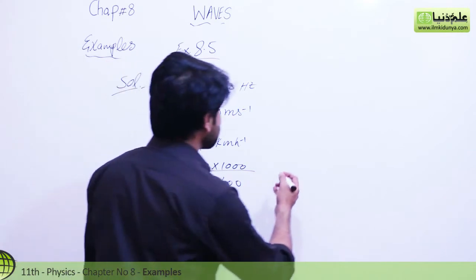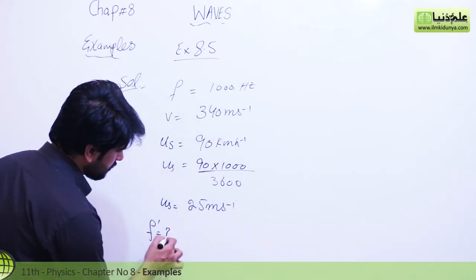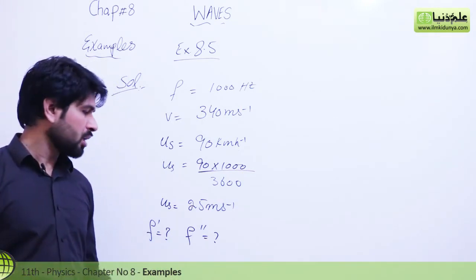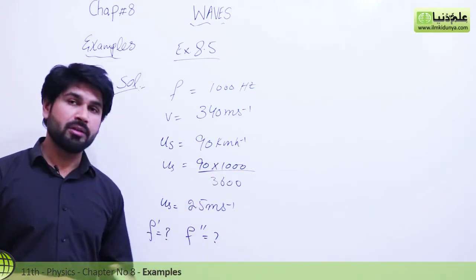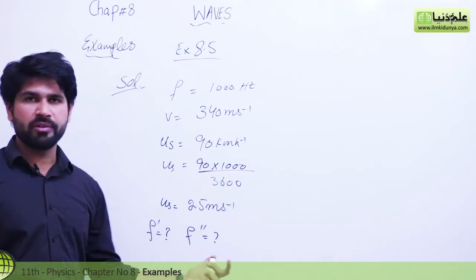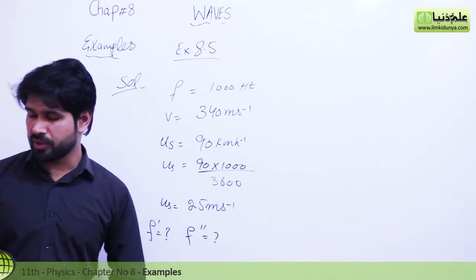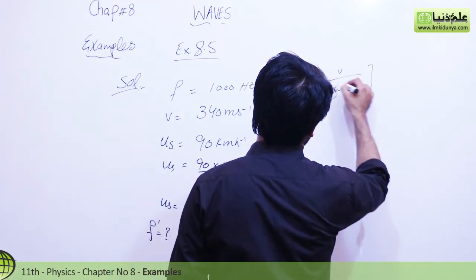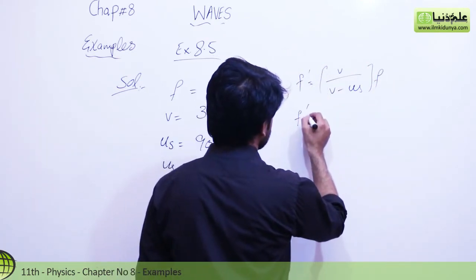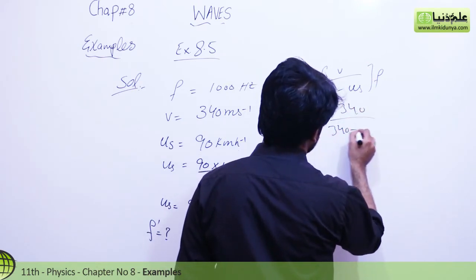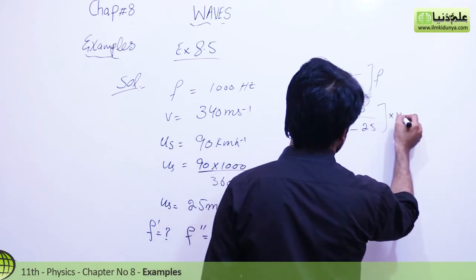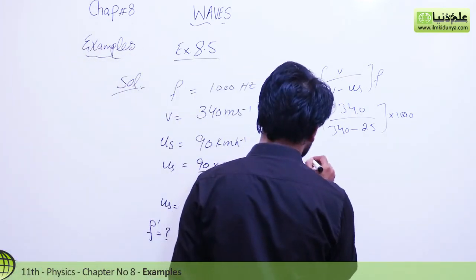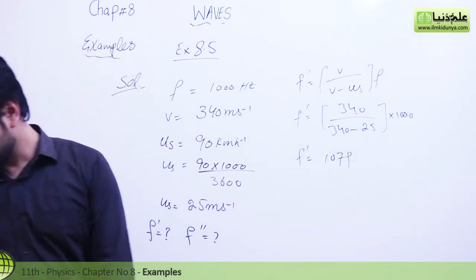The apparent frequency when the train is approaching the station is f' = V / (V − Vs) × F₀. Substituting: 340 / (340 − 25) × 1000 = 340 / 315 × 1000. Solving this gives an apparent frequency of 1079.4 Hz.